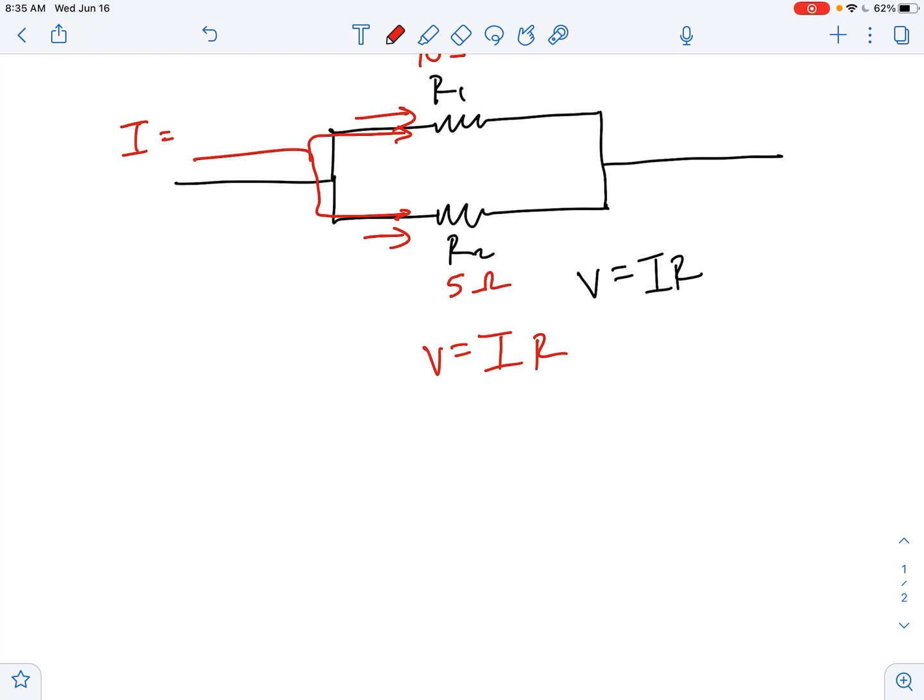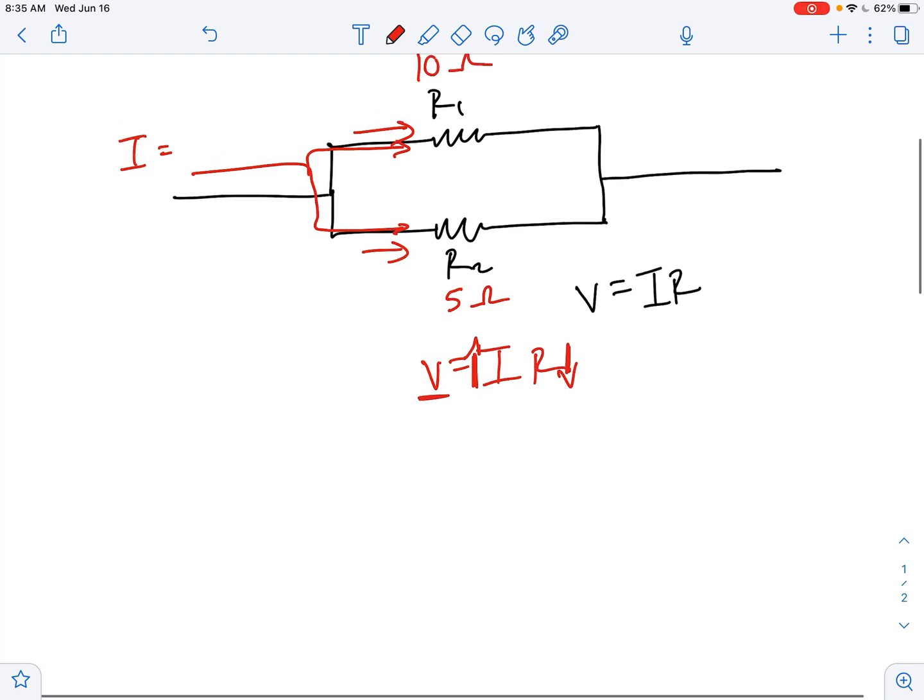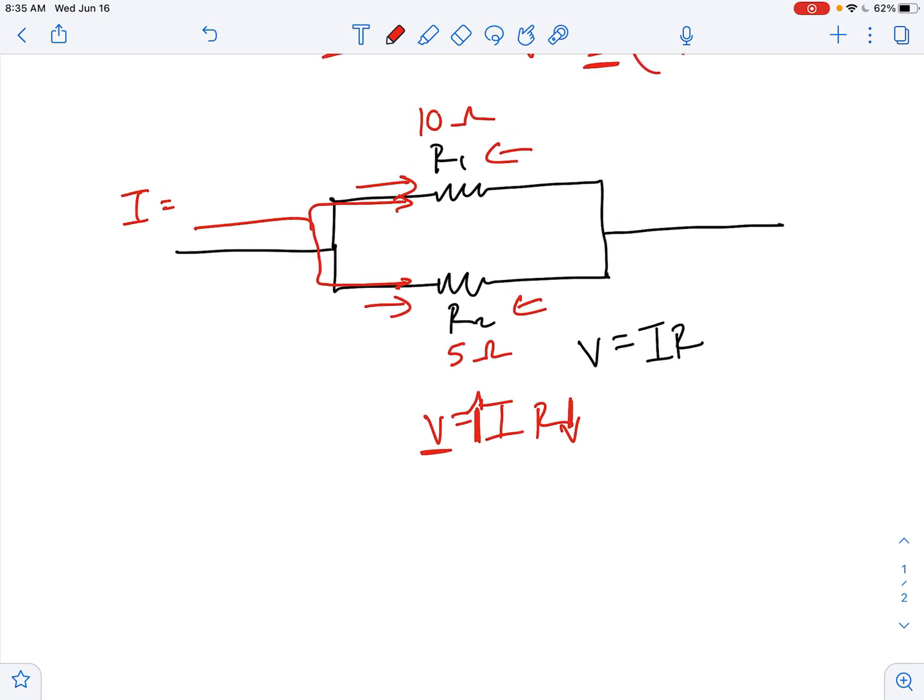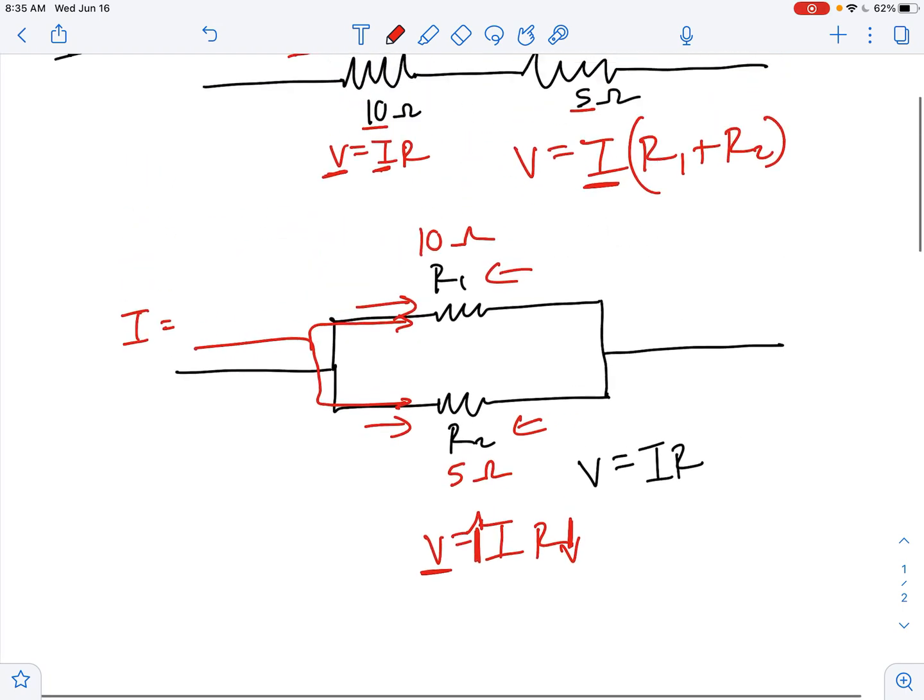We know that the current is necessarily different in each resistor because more current is going to go to wherever there's less resistance and less current is going to go to wherever there's more resistance. So in this example, if you have more current and you have less resistance, in the end the V is going to work out to be constant for both resistors. And so that's why the voltage is constant in a parallel circuit.